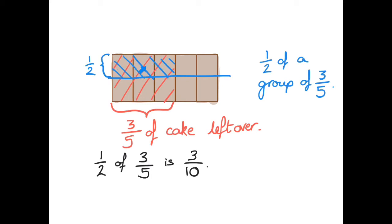OK, that's the half that was eaten. So there's half left over. So half of three fifths is three tenths. Half of a group of three fifths is three tenths.